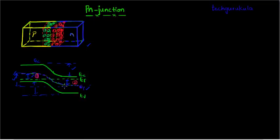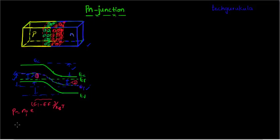Let us call distance one (EI minus EF in P type) and distance two (EF minus EI in N type). We know the majority carrier concentration in P type: P equals NI times e to the power (EI minus EF) over kBT. Rearranging, EI minus EF equals kBT times ln(P over NI). Since P is approximately equal to the acceptor doping concentration NA, we can write P equals NA.